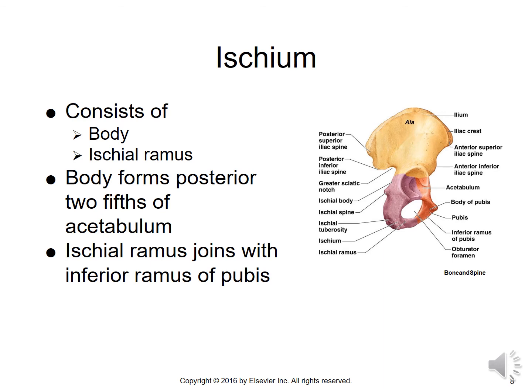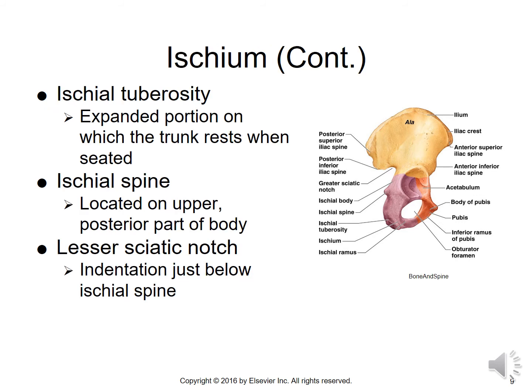Moving on to the ischium, shown in purple, it consists of a body and the ischial ramus. The body forms the posterior two-fifths of the acetabulum — the superior two-fifths was the ilium. There's a ridge of bone termed the ischial ramus, which is most inferior and joins with the inferior ramus of the pubis. The ischial tuberosity is the expanded portion on which the trunk rests when seated. The ischial spine is located on the upper posterior part of the body, and just below it is the lesser sciatic notch.